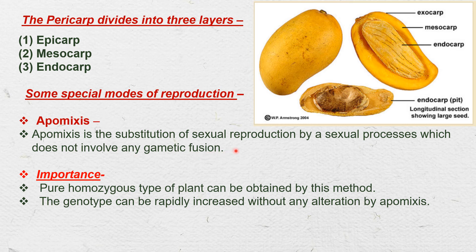Normally, a diploid embryo may be formed as a result of fusion of male and female gametes during sexual reproduction. Thus, the process of sexual reproduction is replaced by asexual reproduction in some plants. The importance of apomixis is that pure homozygous types of plants can be obtained by this method, and the genotype can be rapidly increased without any alteration.